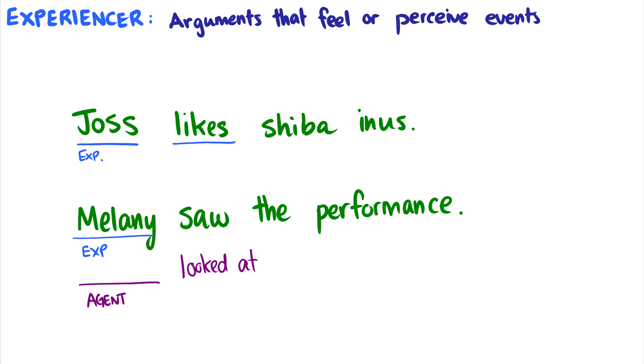you can just be sitting back, laying down, and then suddenly the performance starts in front of you and you're not paying attention, but you're still seeing it. So that's the difference between an experiencer and an agent.